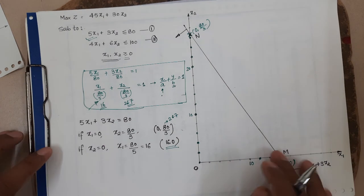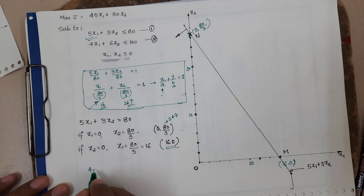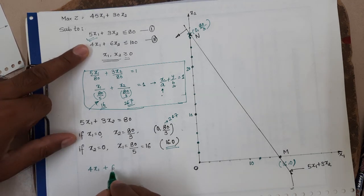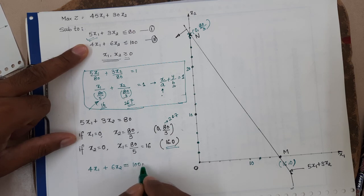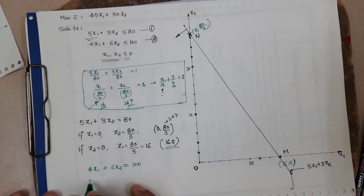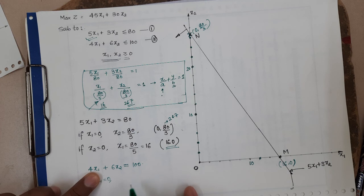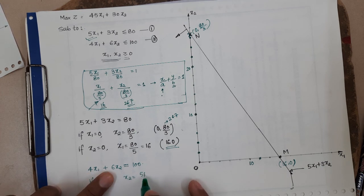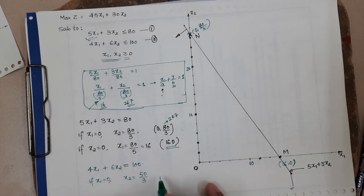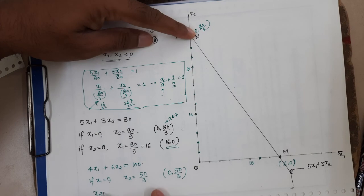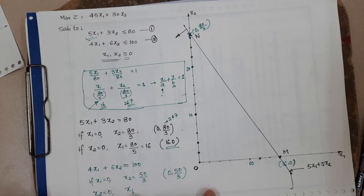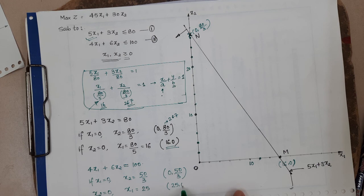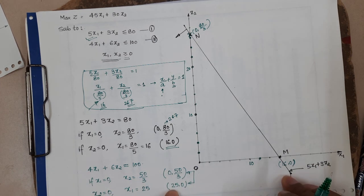Now let us plot the second constraint: 4x1 + 6x2 = 100. Finding the intercepts: if x1 = 0, then x2 = 100/6 = 50/3 ≈ 16.6, giving point (0, 16.6). If x2 = 0, then x1 = 100/4 = 25, giving point (25, 0). These are the two points for constraint 2.